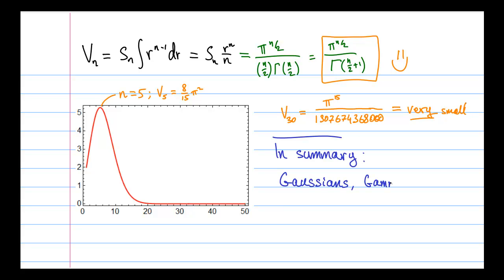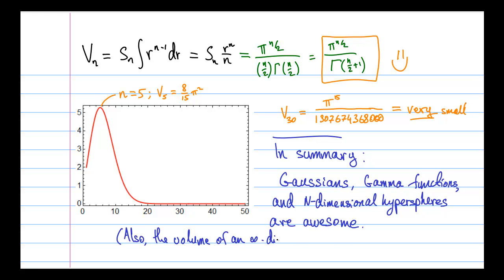So in summary, Gaussians, gamma functions, and n-dimensional hyperspheres are pretty awesome. And now you know that the volume of an infinite dimensional sphere is 0. So math is pretty weird and pretty cool and pretty useful, because, hey, without math we couldn't do physics. That's all I have for today. Hope you liked it. Bye!